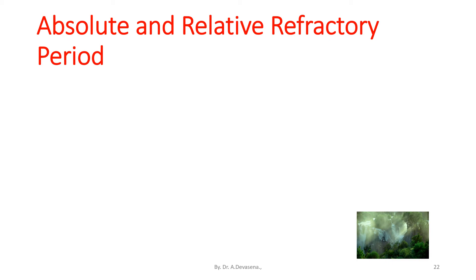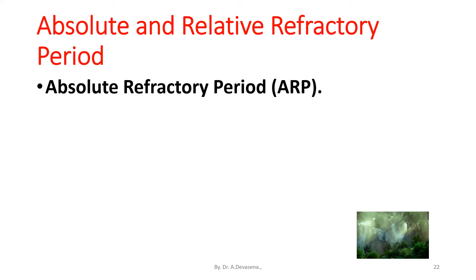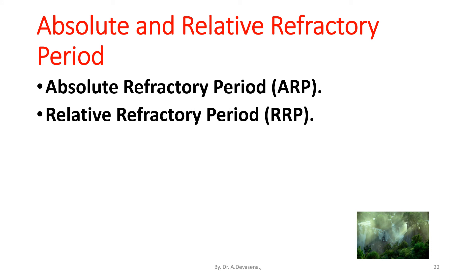Absolute and relative refractory periods: during the initial portion of the action potential, the cell membrane does not respond; that duration is referred to as the absolute refractory period (ARP). During the relative refractory period (RRP), the action potential can be triggered. The refractory period limits the frequency of repetitive excitation.